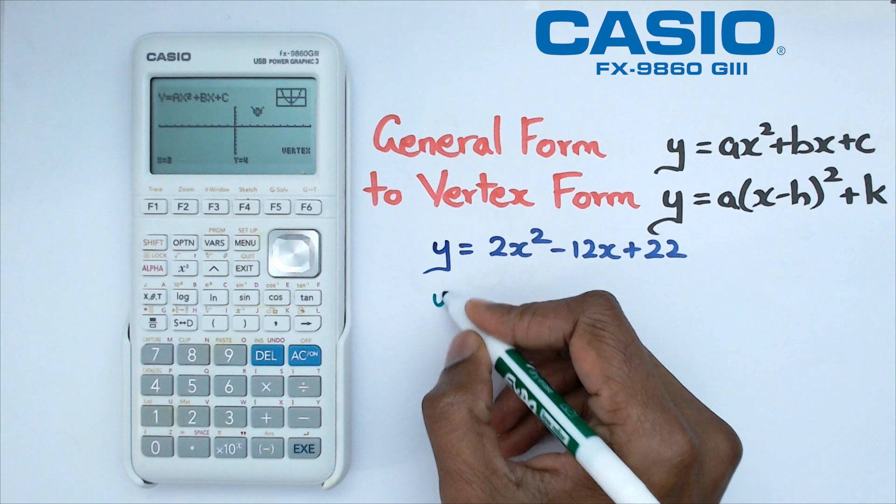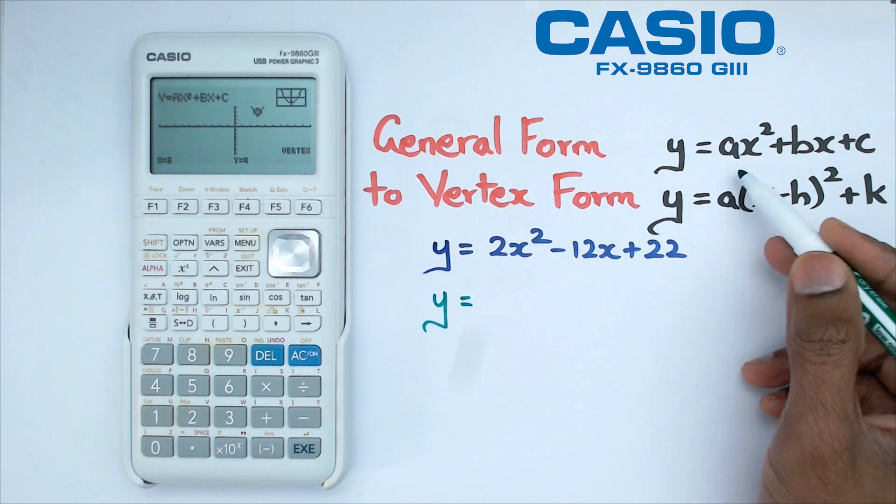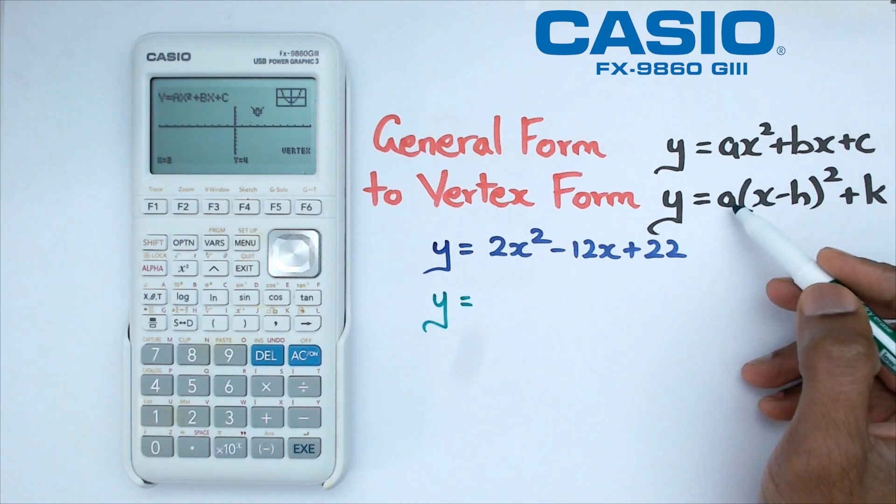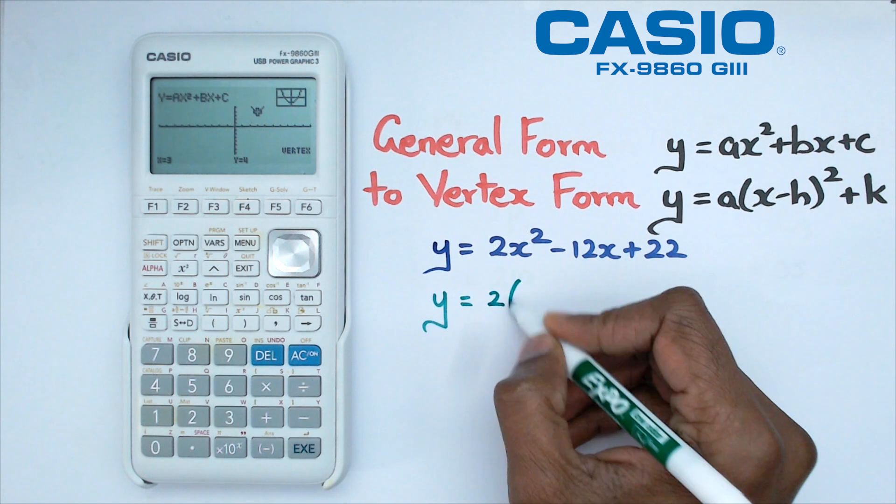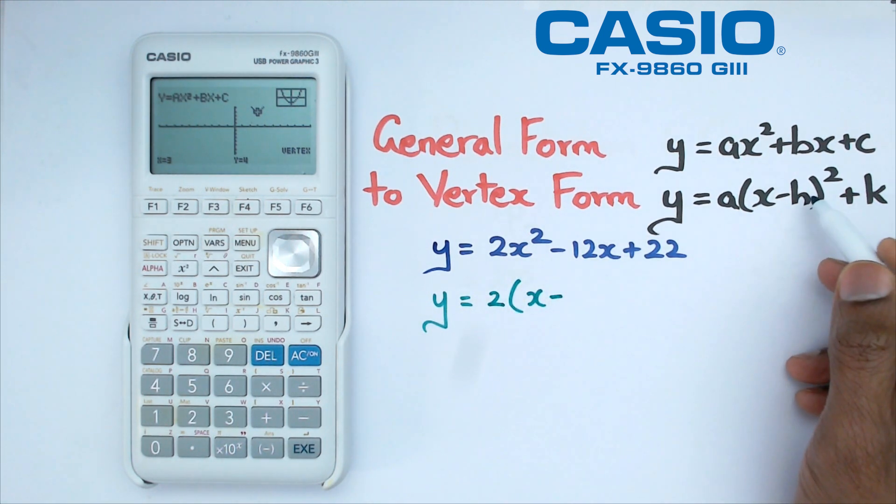Now when it comes to writing this particular formula in the vertex form, what we're going to do is we're still going to write down y equals 2. Now the a value happens to be the same because that was 2 in the general form, which means in the vertex form it will also be 2.